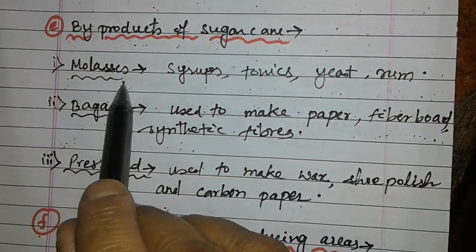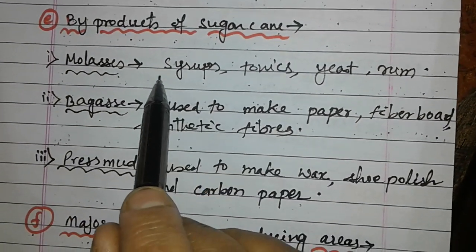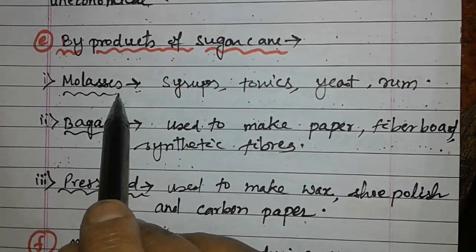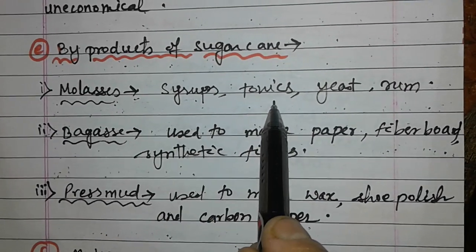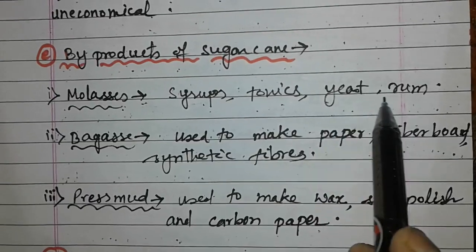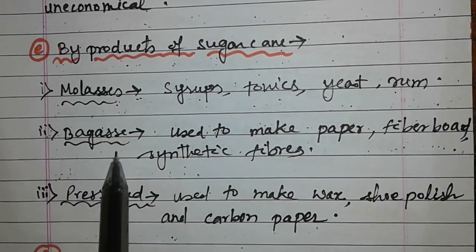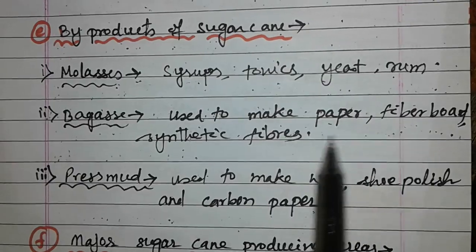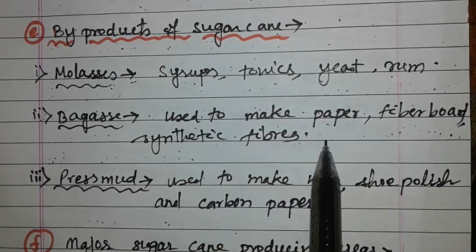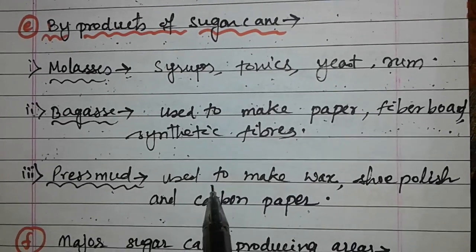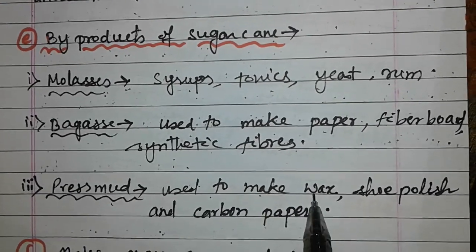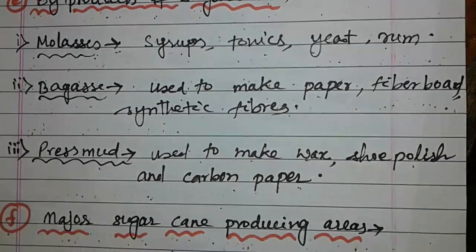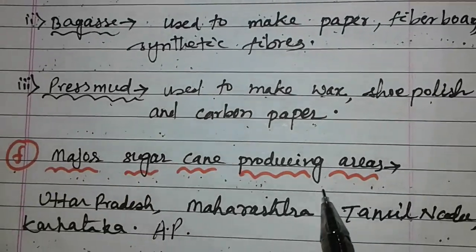By-products of sugarcane: Molasses — a brown colored liquid from which syrups, tonics, yeast, and rum can be prepared. Bagasse — used to make paper, fiber board, and synthetic fibers. Press mud — used to make wax, shoe polish, and carbon paper.